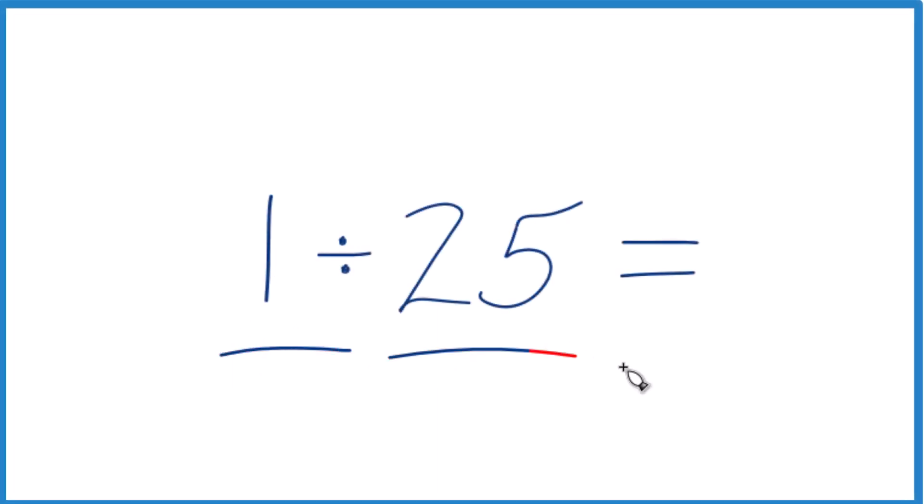Let's divide 1 by 25. And we know that 1 divided by 25, since 1 is a smaller number, we're going to have a decimal less than 1.